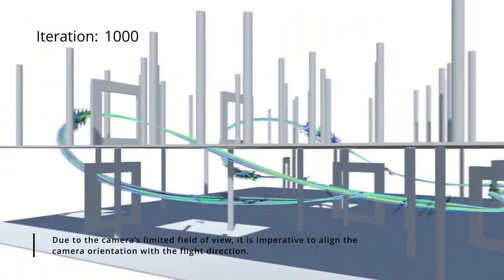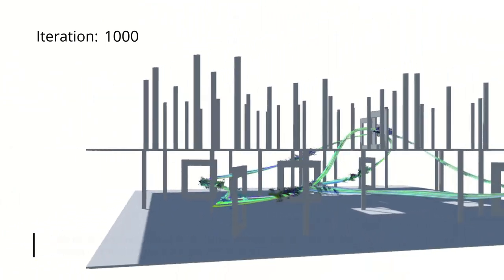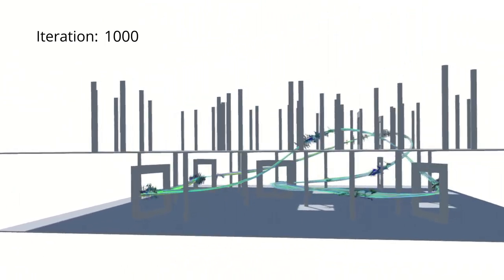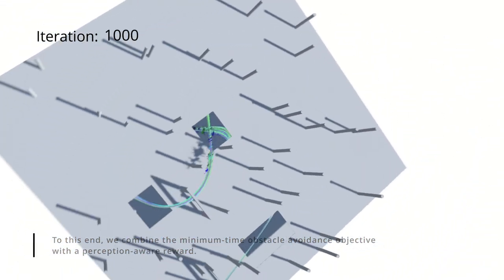Due to the camera's limited field of view, it is imperative to align the camera orientation with the flight direction. To this end, we combine the minimum-time obstacle avoidance objective with a perception-aware reward.